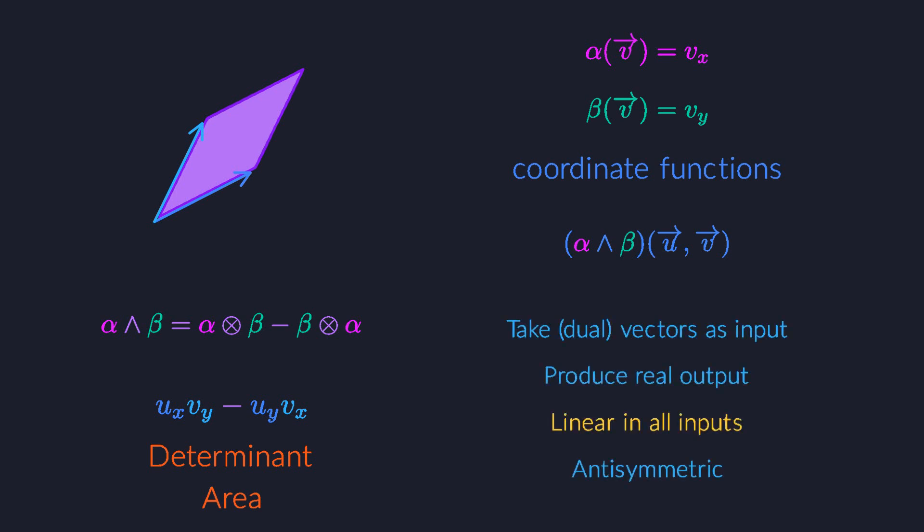Note that the area is indeed linear, as demanded by our requirements. For example, if you scale one of the vectors to twice its size, the area of the parallelogram also becomes twice as large. Linearity is still on our list of requirements. The fact that it's anti-symmetric doesn't change that.